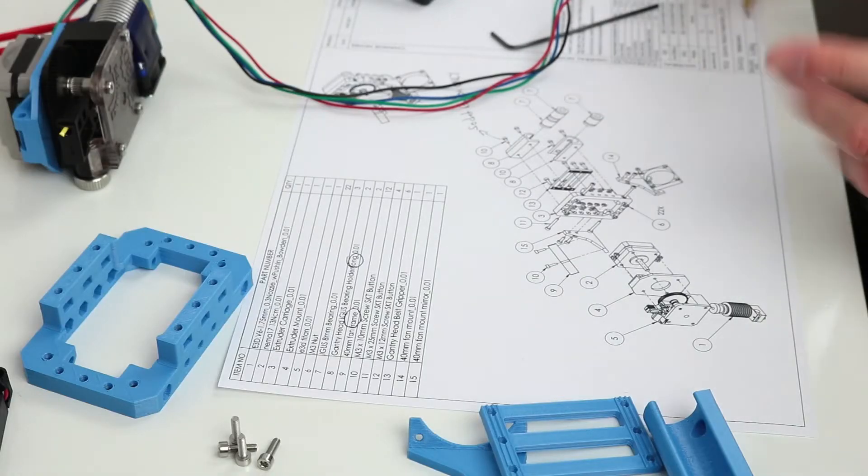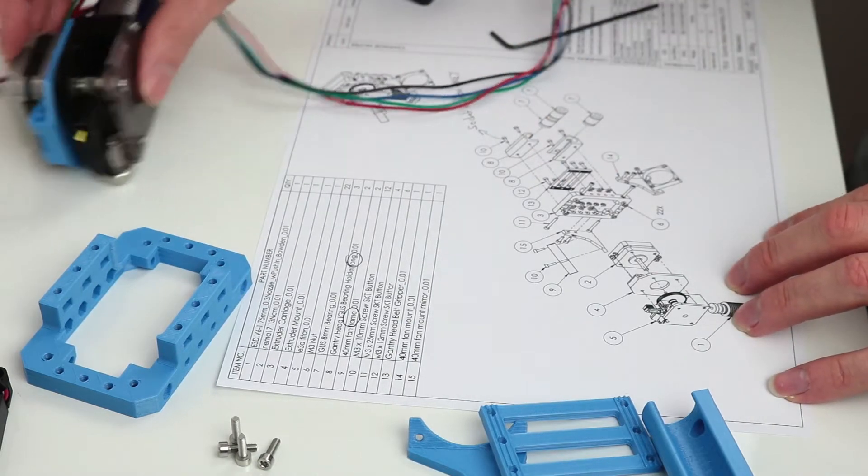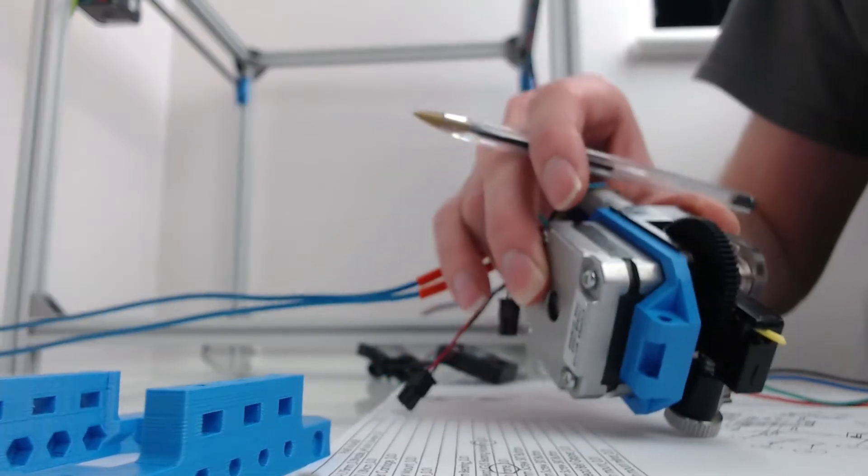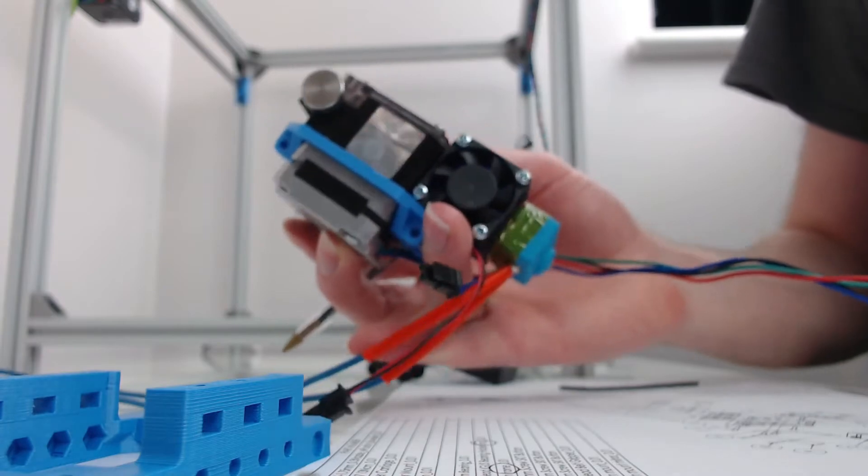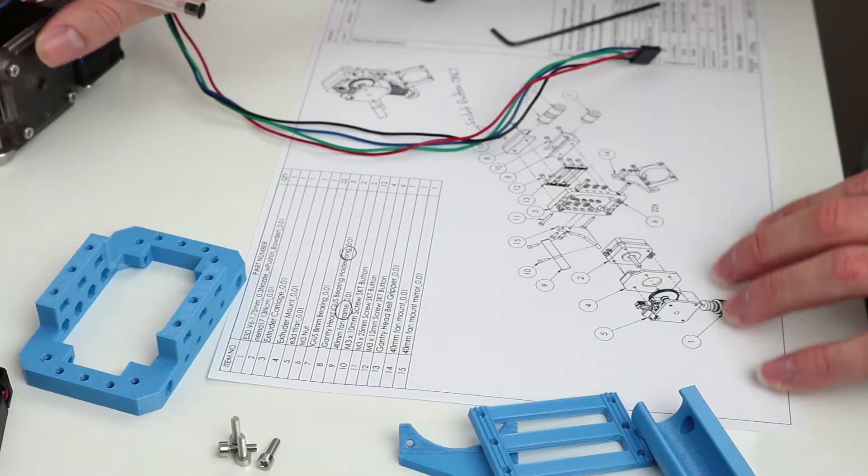So today we're looking at assembling the gantry head assembly, which is basically the bit with the extruder and the hot end and that sort of stuff, with the part that slides along the gantry.